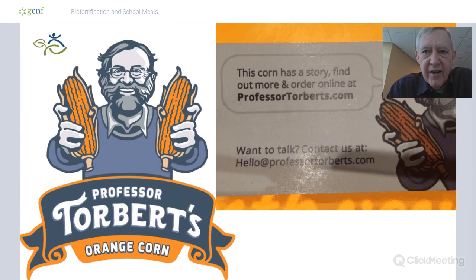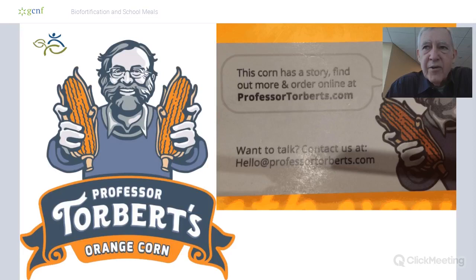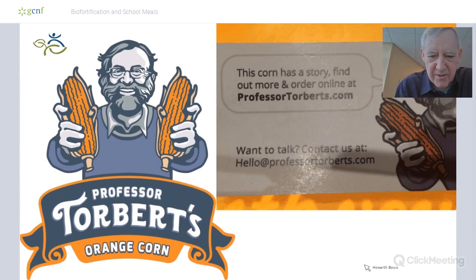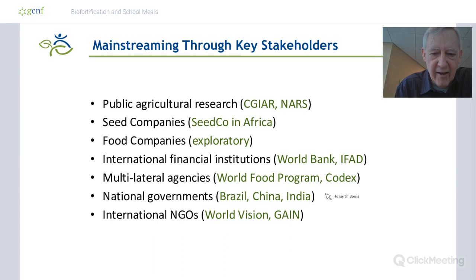Orange corn is now available in the United States — you can buy it on Amazon as orange maize grits. Professor Torbert, a maize geneticist at Purdue University, helped us identify some of the genes through conventional breeding for developing the orange maize. Purdue University owns the patent for orange maize in the United States and he started a small business — if you want orange maize grits, you can purchase them on Amazon.